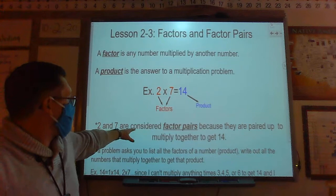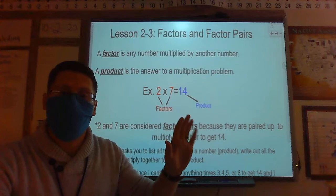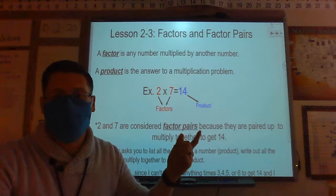So if I look right here, 2 and 7 are considered factor pairs because they are paired up to multiply together to get 14. So the difference between factors and factor pairs is factors are the individual numbers, so 2 and then 7. Factor pairs are 2 and 7 because they pair up together to be my factor pairs.